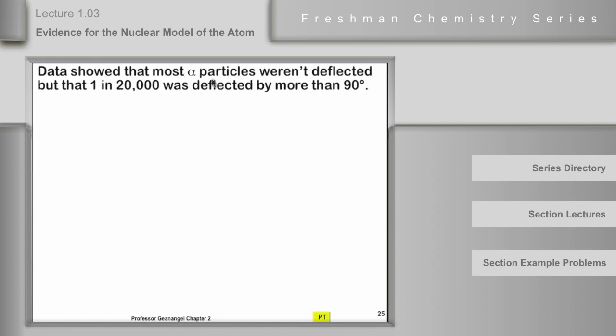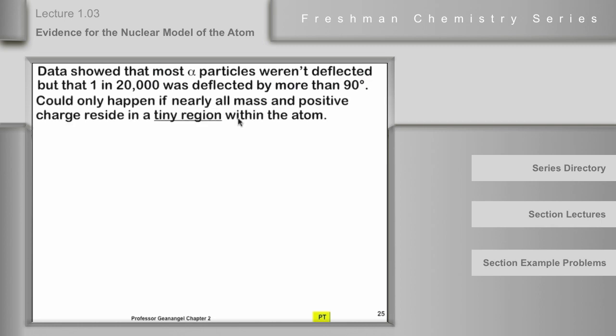The data were that most of the alpha particles weren't deflected at all. One in 20,000 was deflected by more than 90 degrees, however. So if you think about what that means, it means essentially that the deflection must occur by the alpha particle hitting a concentrated mass. The mass would be concentrated not in the plum pudding model, but in what we call the nuclear model where most of the mass and the positive charge in the nucleus of an atom occupies a tiny section, part of the atom.